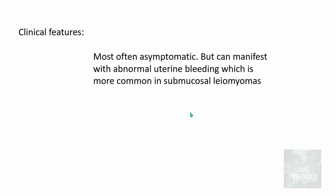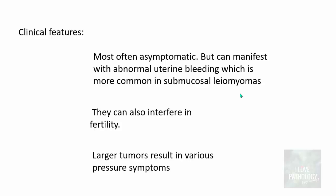What are the clinical features? Most of the leiomyomas they are asymptomatic but they can manifest with abnormal uterine bleeding particularly menorrhagia which is more common in a submucosal type of leiomyoma. We will talk about different types of leiomyoma shortly. Now they can also interfere in fertility and the larger tumors they result in various symptoms particularly related to compression symptoms. They are pressure symptoms because of pressure effects by these tumors on to the surrounding structures.